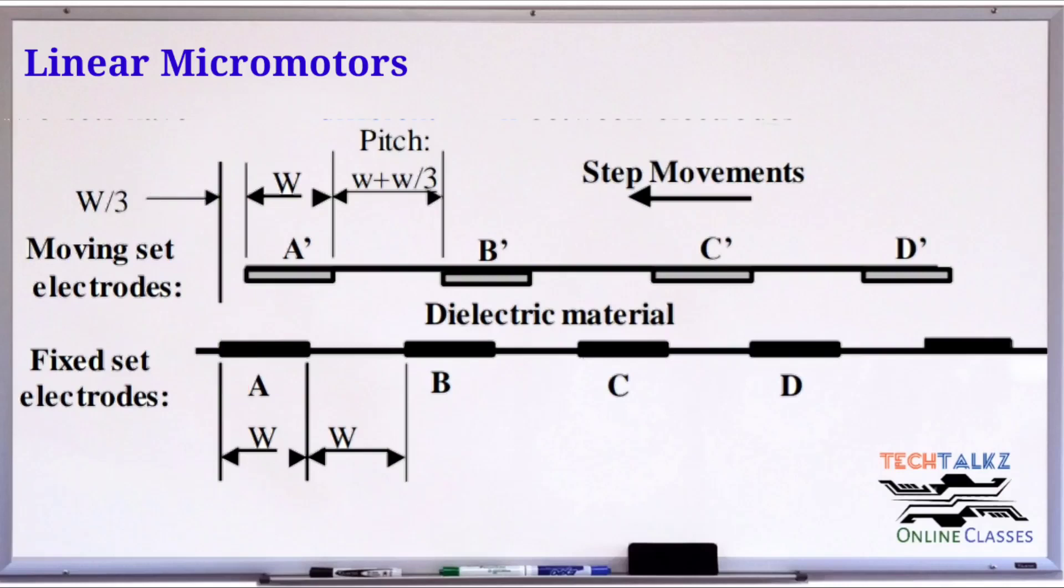When voltage is applied here, they will try to align themselves. Top electrodes are moving, bottom electrodes are fixed. A-dash will move left, traveling W by 3 distance. Now A A-dash is in aligned condition.